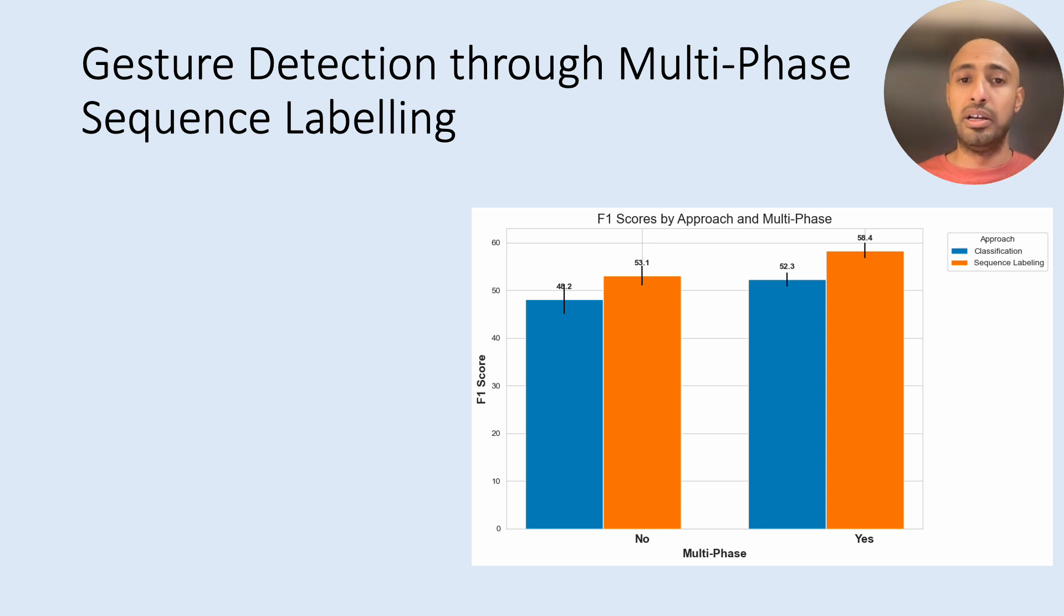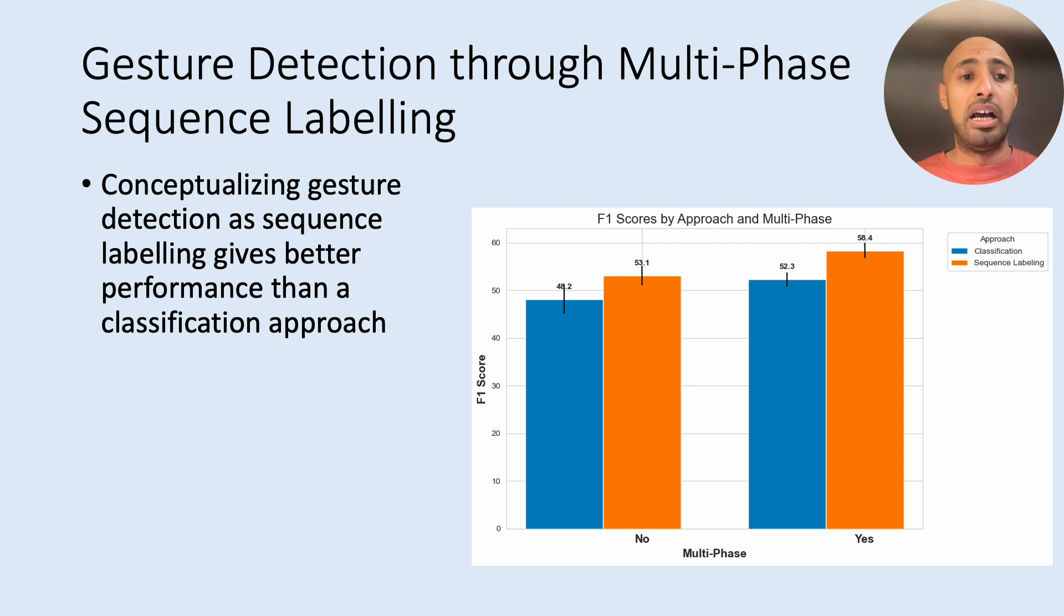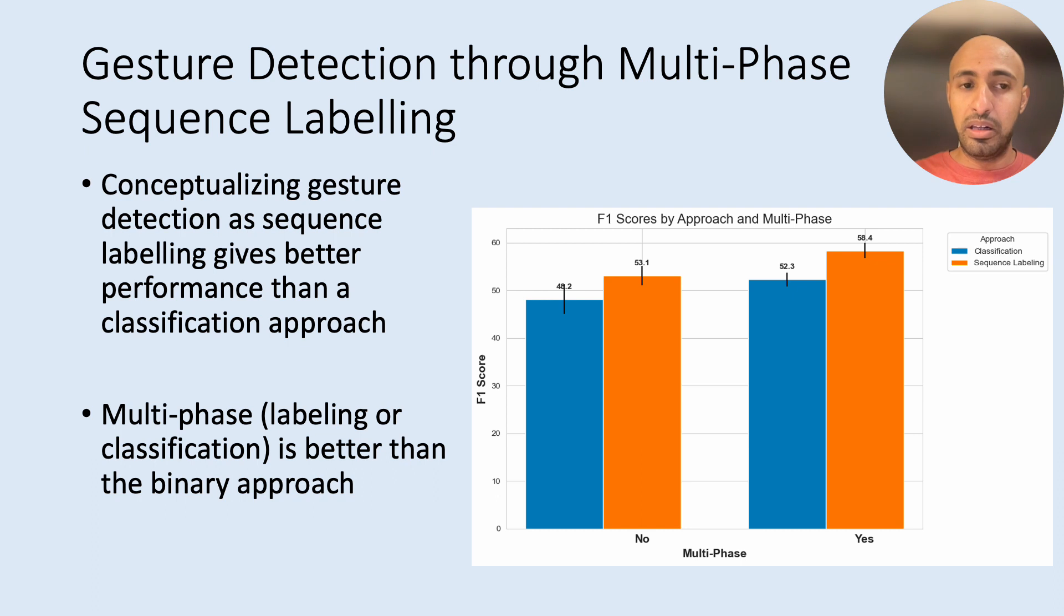And also in terms of multi-phase approach. We also see that conceptualizing gesture detection as a multi-phase sequence labeling and multi-phase problem outperforms the binary case. For example, here we see that sequence labeling of multi-phase gestures outperforms sequence labeling of just gesture stroke versus neutral movement in a binary manner. But of course, the main outcome here is also the fact that sequence labeling outperforms classification approaches in either way.